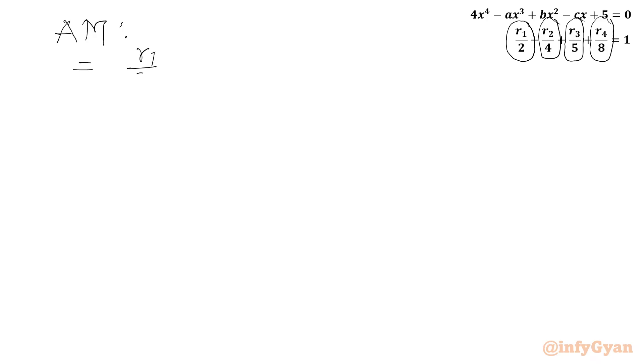So AM will be equal to R1 over 2 plus R2 over 4 plus R3 over 5 plus R4 over 8 divided by total count which is 4. Now as per given equation this is 1. So we can write here AM equal to 1 over 4.